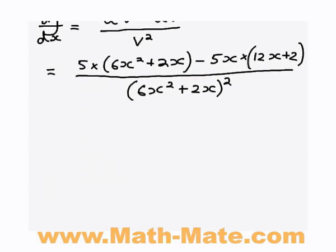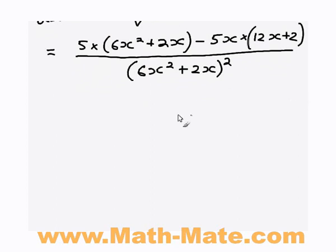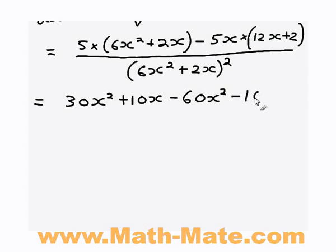So first up, let's multiply out the top of the fraction. So 5 times 6x squared is going to be 30x squared. 5 times 2x is going to be 10x. And we've got a negative 5x minus times 12x, which is negative 60x squared. And a negative 5x times 2, which is negative 10x.